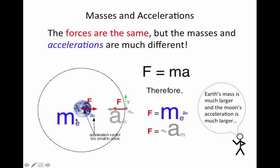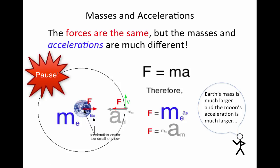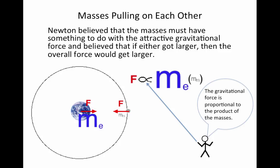The earth does wobble a little because of the tug of the moon, and ocean tides show us that the moon is pulling on the earth too. In Newton's second law, F equals MA, Newton knew that force and mass go together. He realized that if we're going to have equal and opposite forces, maybe the interaction of these masses is what causes gravity. He believed the force of gravity is proportional to the product of the masses — mass of earth times mass of moon. If either mass got larger, the gravitational force between them would get larger.